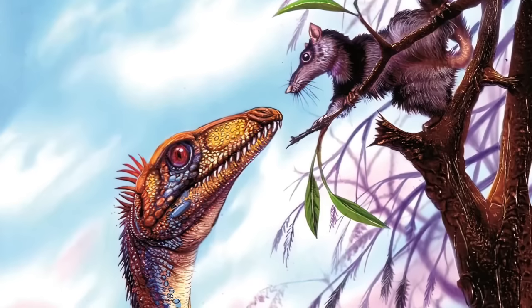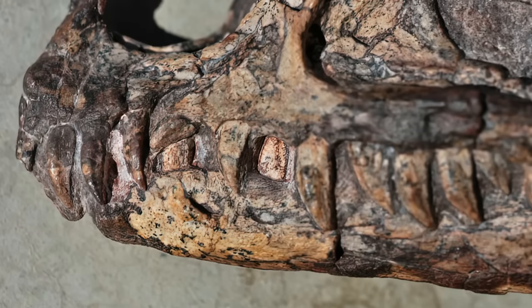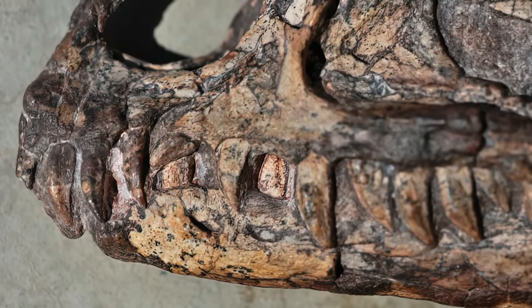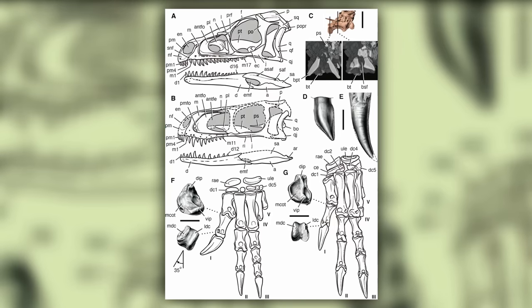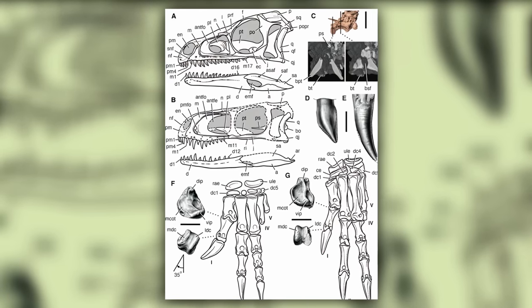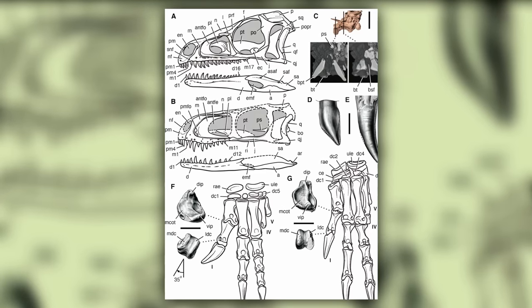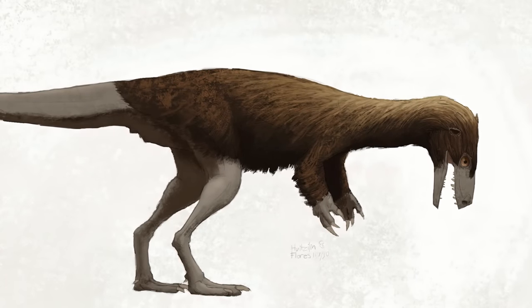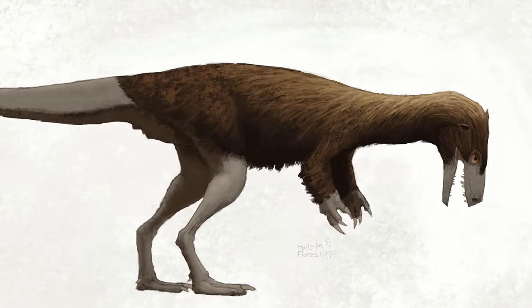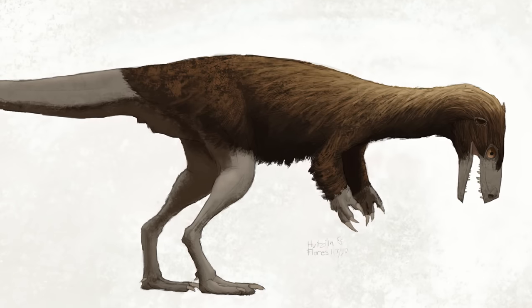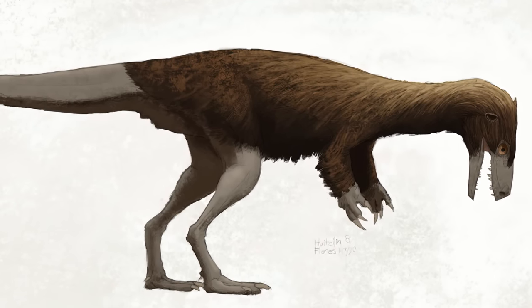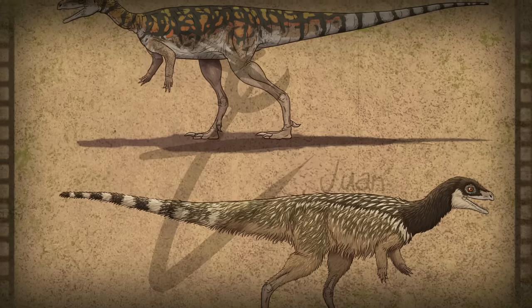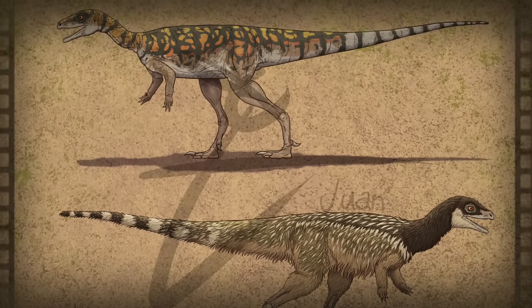Eoraptor had different types of razor-sharp teeth. Its top teeth were jagged like a saw and curved like those of other meat-eating dinosaurs, while the bottom teeth were similar to those of plant-eating dinosaurs, indicating that Eoraptor was most likely an omnivore. Its relatively long hind limbs suggest it was well adapted to pursue prey, and the shorter forelimbs might have served a more specialized role in catching or manipulating food items.